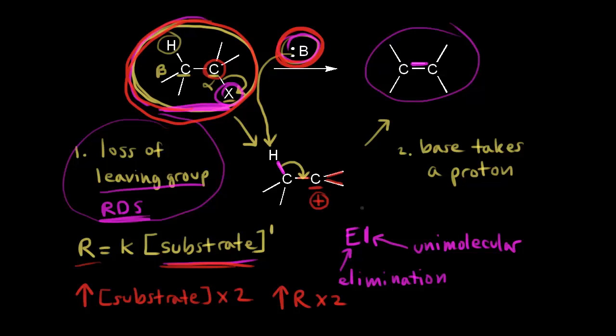One more point about the mechanism: the formation of the carbocation means you need to think about the possibility of rearrangements. You also need to think about what substrate would form a stable carbocation. Something like a tertiary substrate forming a tertiary carbocation would be favorable for an E1 mechanism.